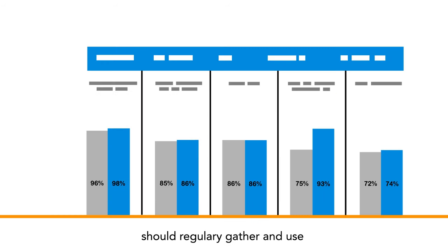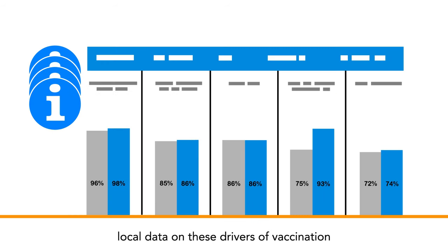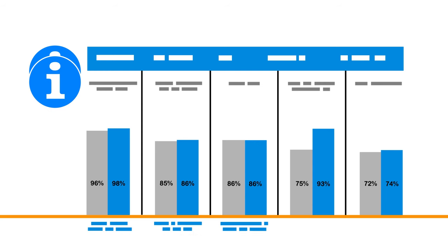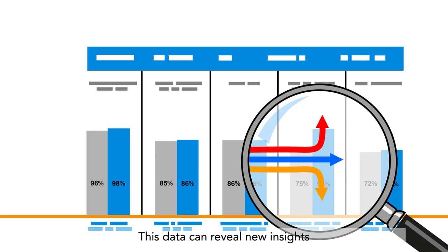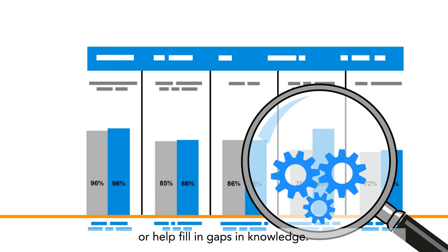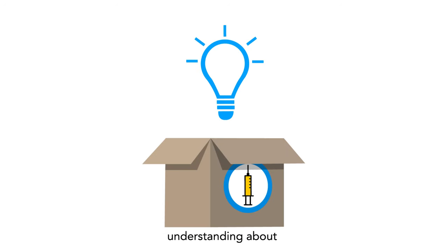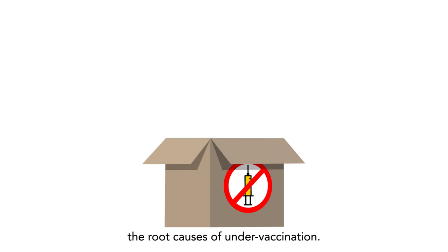Immunization programs should regularly gather and use local data on these drivers of vaccination to guide their planning. This data can reveal new insights that may have been previously unrecognized or help fill in gaps in knowledge. Perhaps it can offer a deeper understanding about the root causes of under-vaccination.